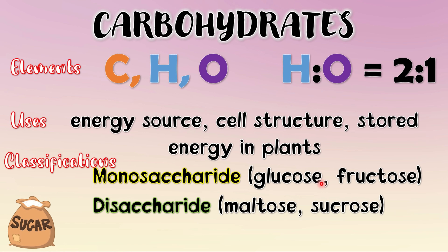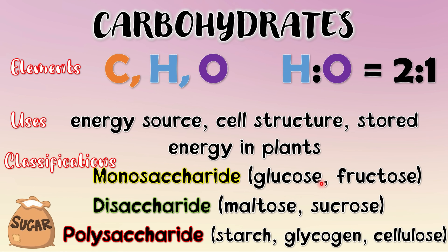Lastly, we have polysaccharide. From the word itself, 'poly' means two or more. Examples are starch, which is the stored energy in plants; glycogen, which is a human or animal's reserve stored in our liver and muscles; and cellulose, which makes up the cell wall in plants.